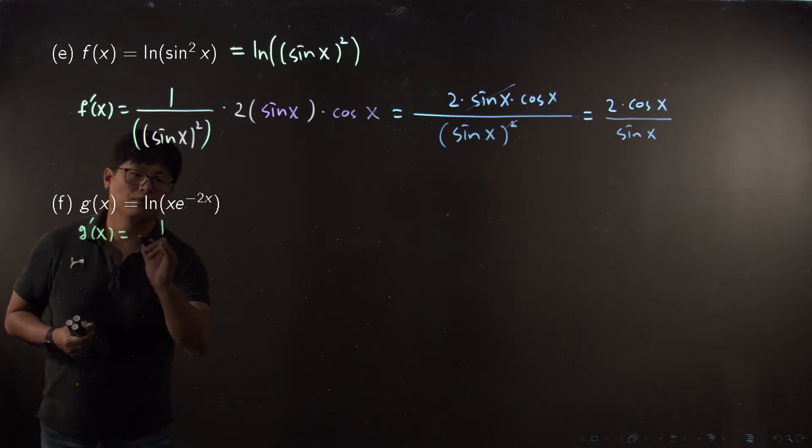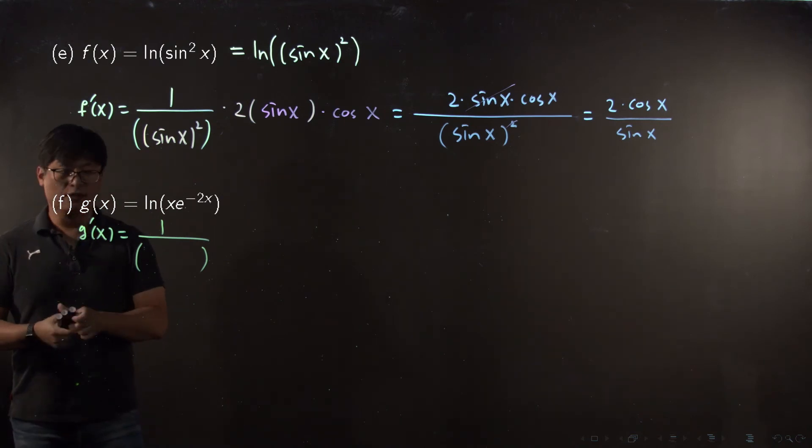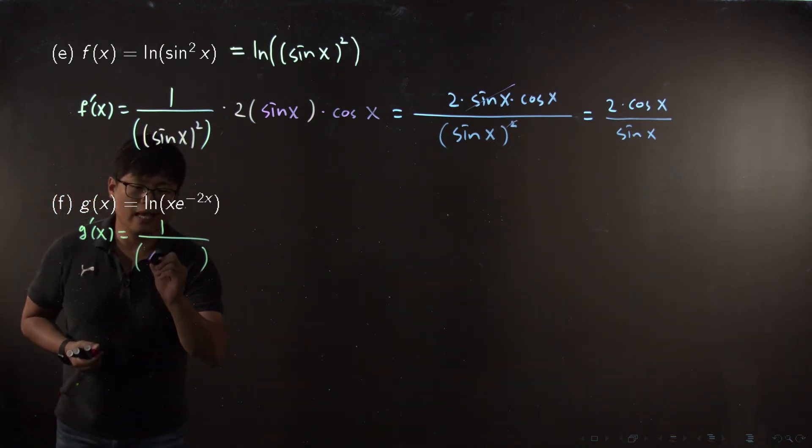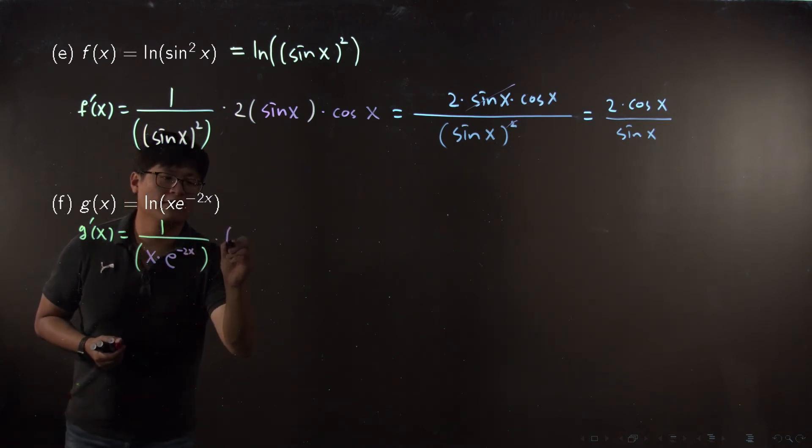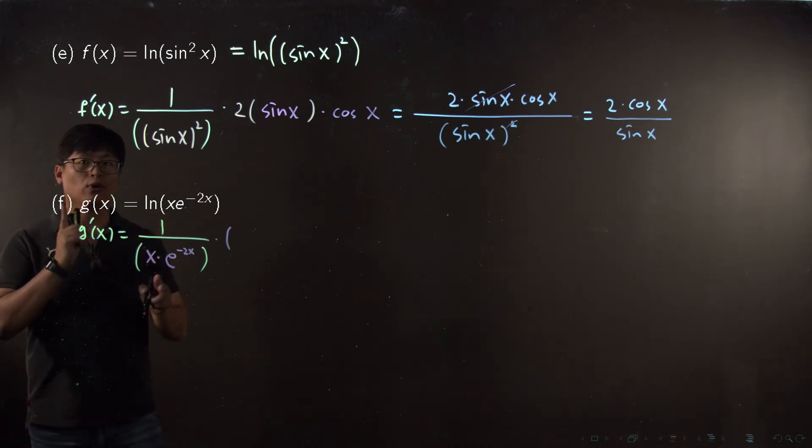g prime of x equals the outside function prime, log function prime, which is reciprocal: one over x times e to the minus 2x. Then you have to multiply the derivative of x times e to the minus 2x.